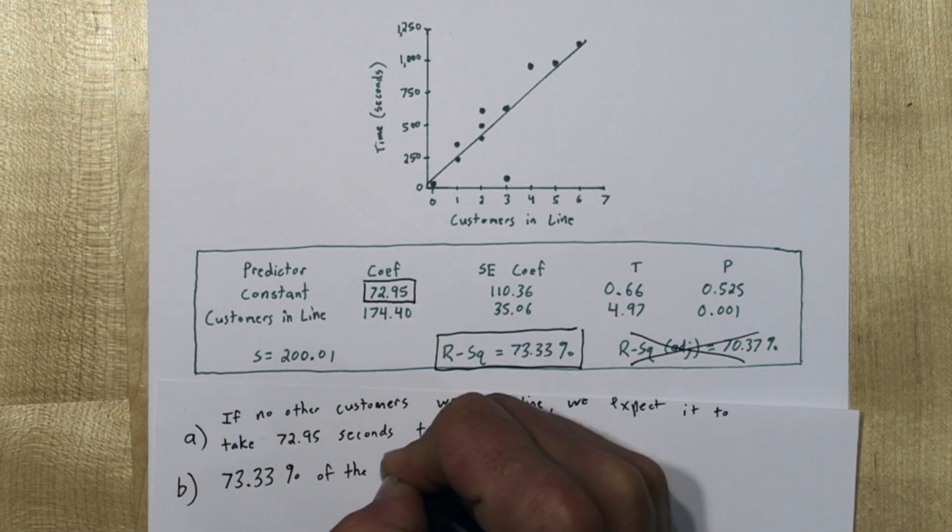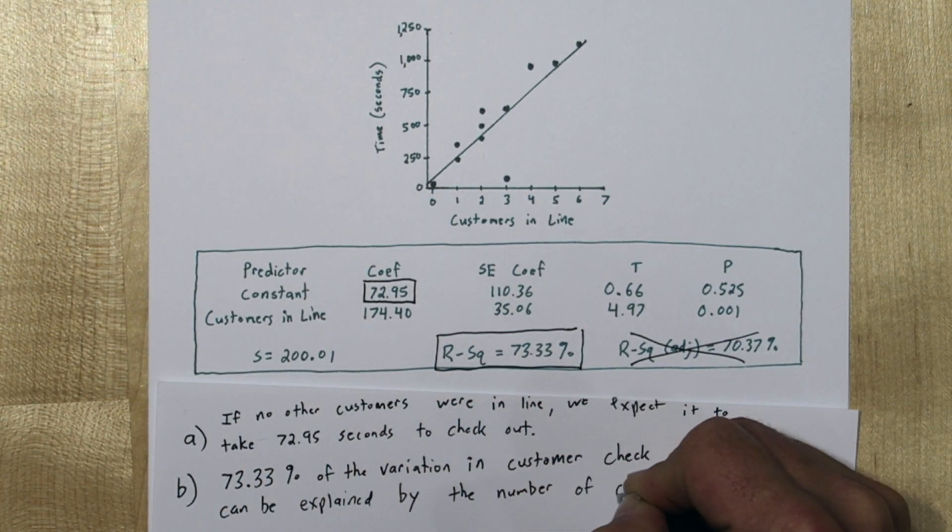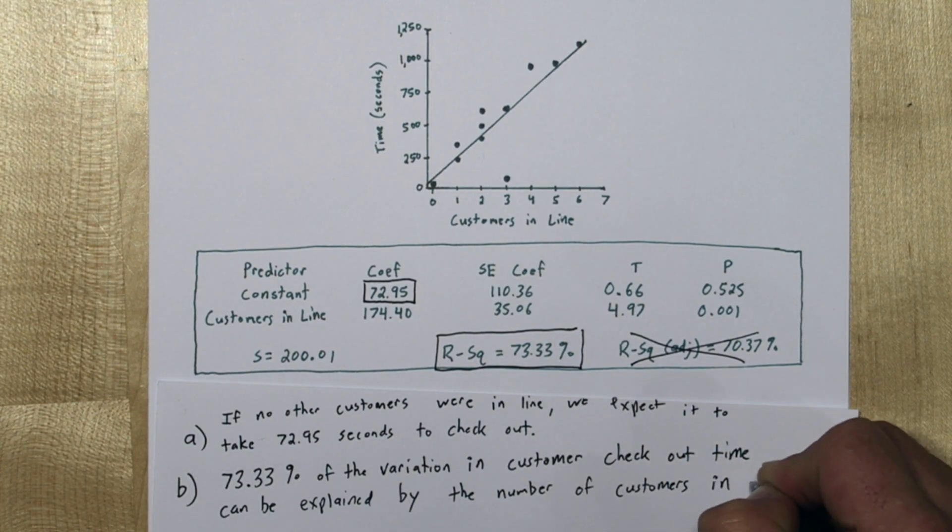We can interpret this as 73.33% of the variation in customer checkout time can be explained by the number of customers in line.